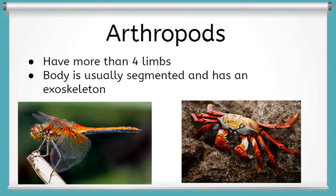The final animal class we will discuss is arthropods. Arthropods are animals that have more than four limbs. They also commonly have paired jointed limbs, a segmented body, and an exoskeleton. Arthropods are a broad class that includes many different species, including crabs and insects.